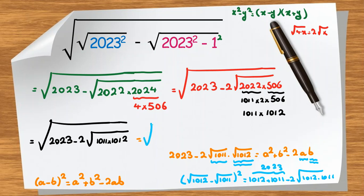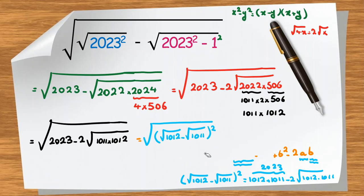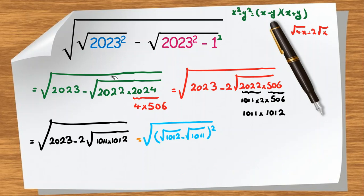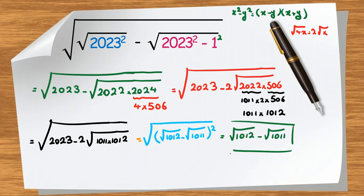We conclude that the expression inside the outer square root equals the square root of 1012 minus the square root of 1011, all squared. Taking the outer square root gives us the final answer: the square root of 1012 minus the square root of 1011.